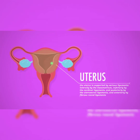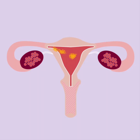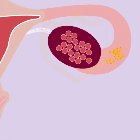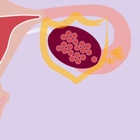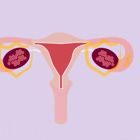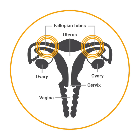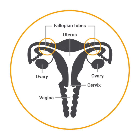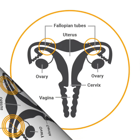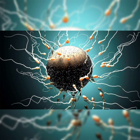The ovaries are small, oval-shaped glands located on either side of the uterus. They produce eggs and hormones. The fallopian tubes are narrow tubes attached to the upper part of the uterus that serve as a pathway for eggs to travel from the ovary to the uterus. Fertilization of an egg by sperm normally occurs in the fallopian tubes.